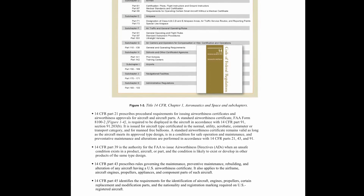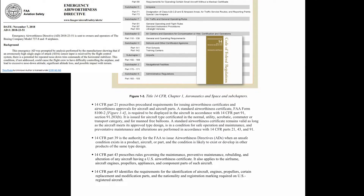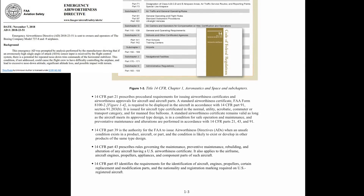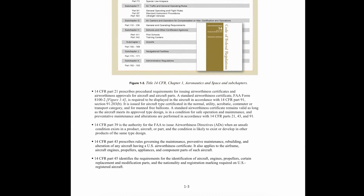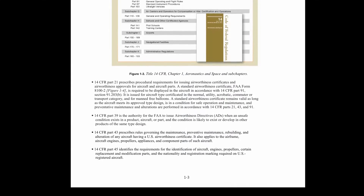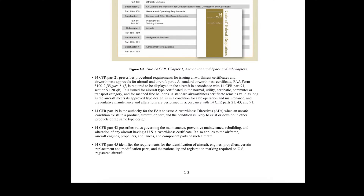14 CFR Part 39 is the authority for the FAA to issue airworthiness directives when an unsafe condition exists in a product, aircraft, or part, and the condition is likely to exist or develop in other products of the same type design. 14 CFR Part 43 prescribes rules governing the maintenance, preventative maintenance, rebuilding, and alteration of any aircraft having a U.S. airworthiness certificate. It also applies to the airframe, aircraft engines, propellers, appliances, and component parts of such aircraft. 14 CFR Part 45 identifies the requirements for the identification of aircraft, engines, propellers, certain replacement and modification parts, and the nationality and registration marking required on a U.S. registered aircraft.